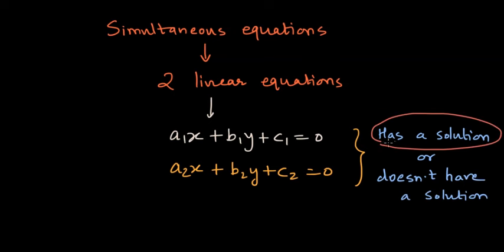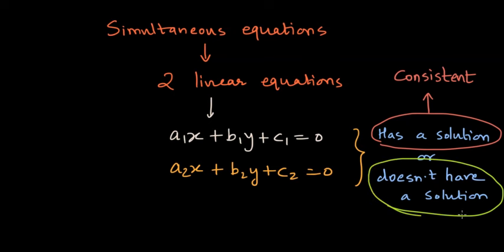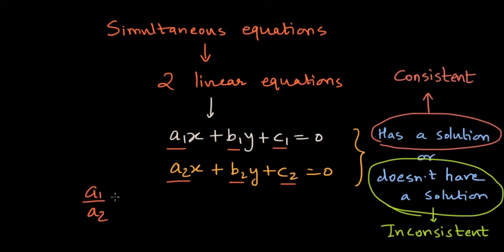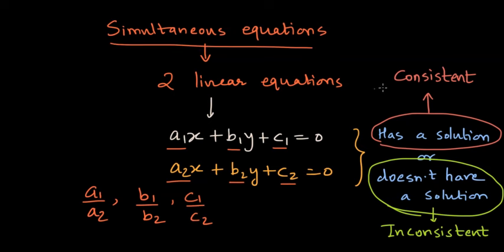When the given system of equations, or the given simultaneous equations, have a solution, we say it's consistent. And when it doesn't have a solution, we say it's inconsistent. Our objective is to look at these coefficients of the given simultaneous equations and compare the fractions a1 by a2, b1 by b2, and c1 by c2, to identify whether the simultaneous equations are consistent or inconsistent.